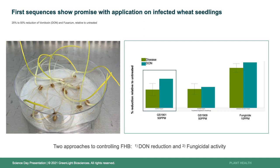The picture on the left shows our seedling assay untreated control, and the chart on the right shows reduction of DON in blue and reduction of disease in green. The fungicide control is shown as percent relative to the negative control — bigger bars are better. Some of the Green Light sequences are demonstrating 25 to 50% reduction of DON production as well as significant decrease in fungal growth. We have clearly validated that both approaches — DON reduction and fungicidal activity — can be deployed to control this pest using double-stranded RNA.